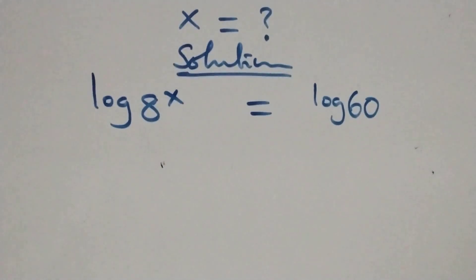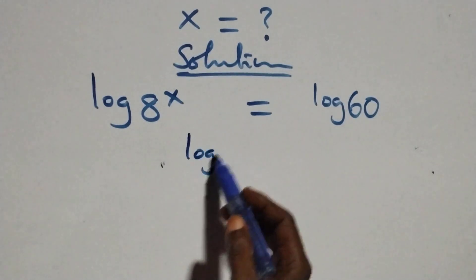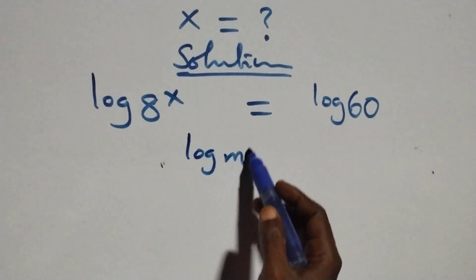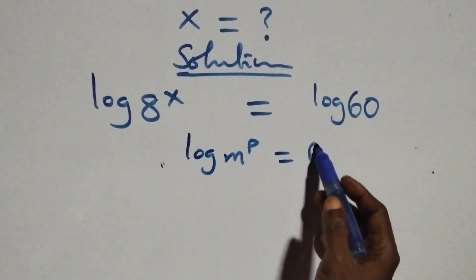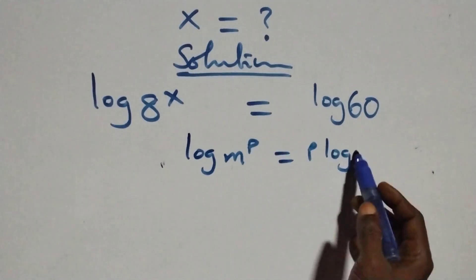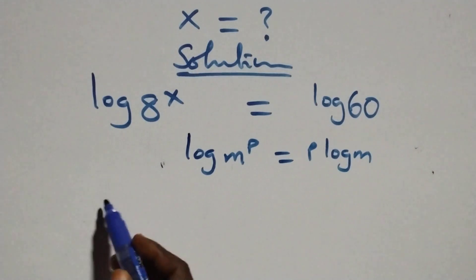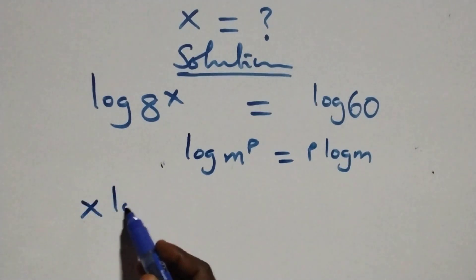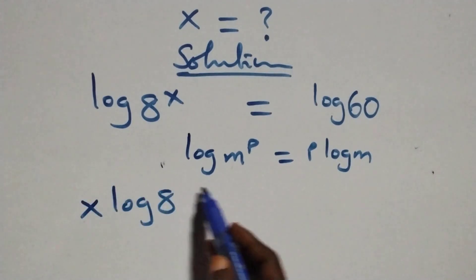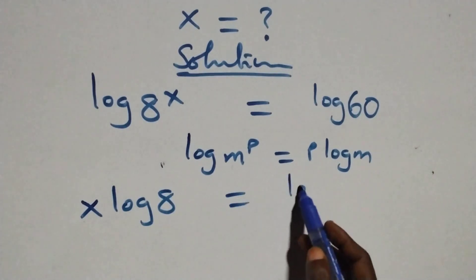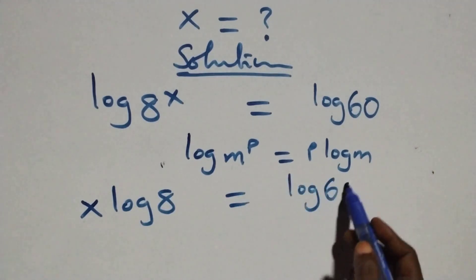The next step here, we apply the power of logarithm. When we have log m raised to the power p, this is the same thing as p log m. At this here we have x log 8 equals to log 60.